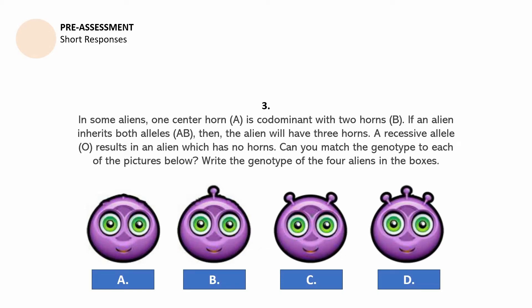For number three, in some aliens, one center horn or A is codominant with two horns or B. If an alien inherits both alleles AB, then the alien will have three horns. A recessive allele O results in an alien which has no horns. Can you match the genotype to each of the pictures below? Write the genotype of the four aliens in the boxes. You have to write the genotype of the four aliens in the boxes. So we have A, B, C, and D.